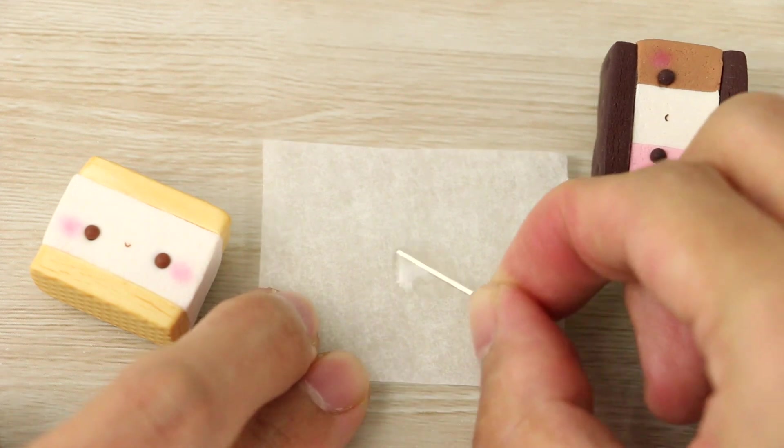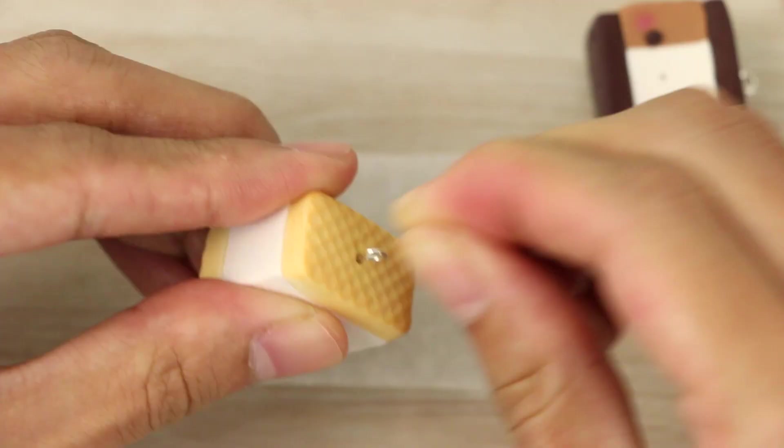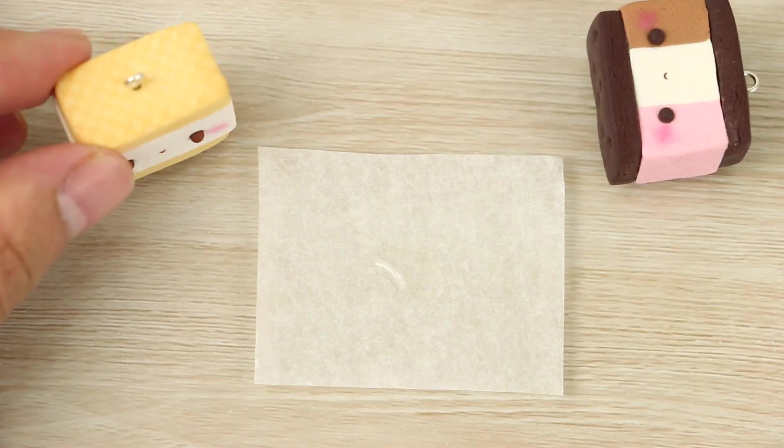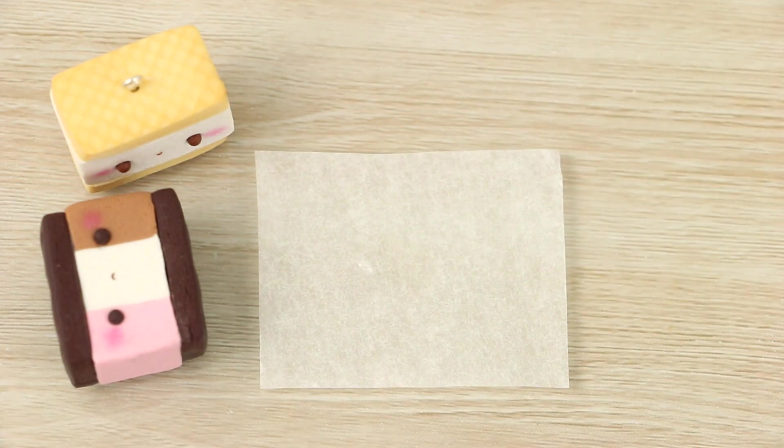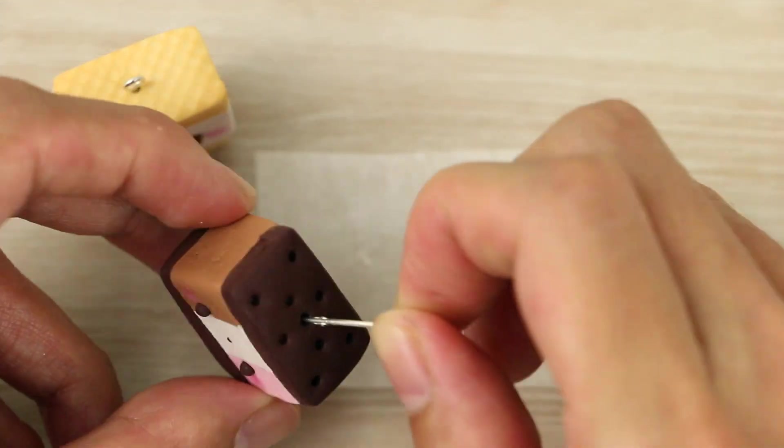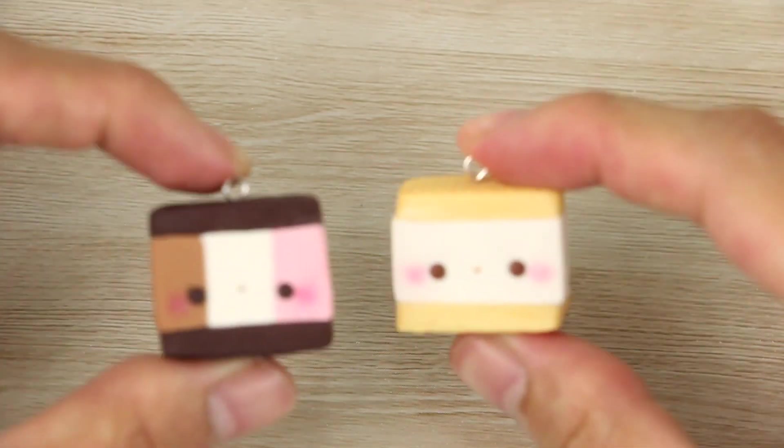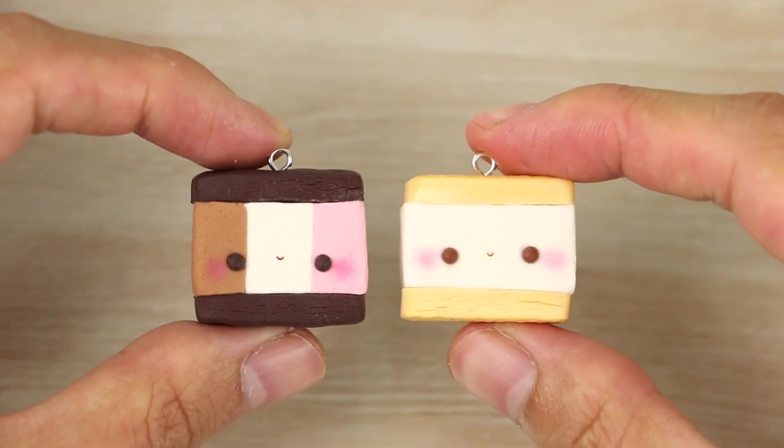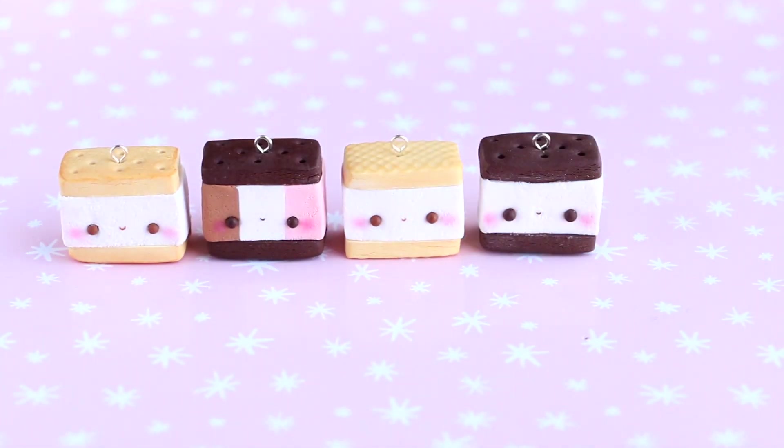And then once they're fully cooled down, I'm securing the eye pins with some super glue. These little ice cream sandwiches are really fun to make and you can also mix and match different combinations of the cookies and ice creams to make different varieties like these ones.